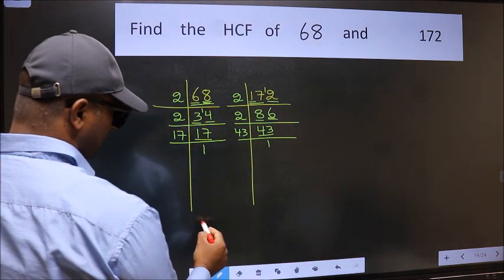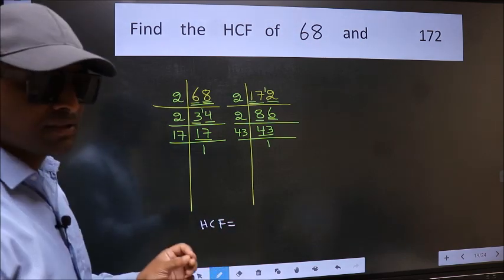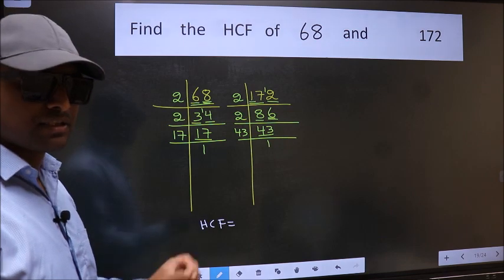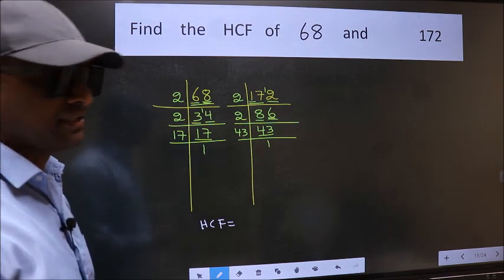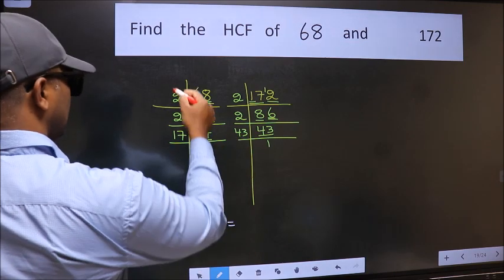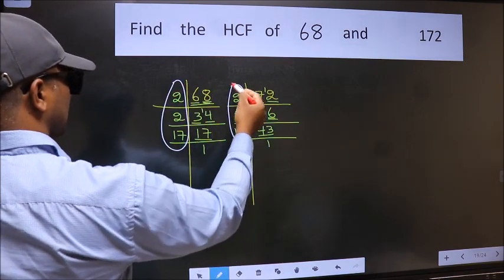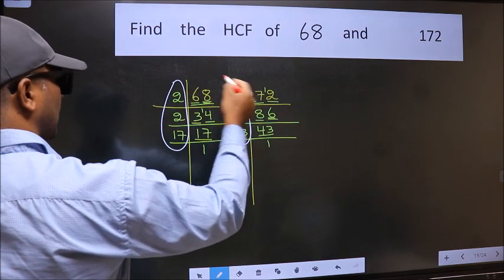Therefore, our HCF is the product of the numbers which should be present in these two places. That is here and also here, here and here.